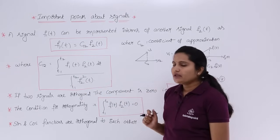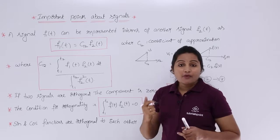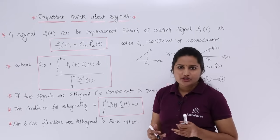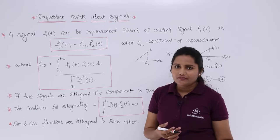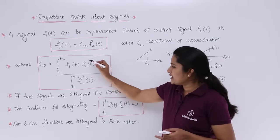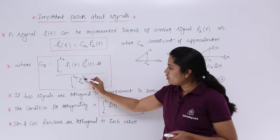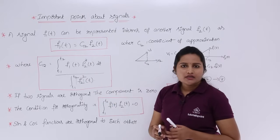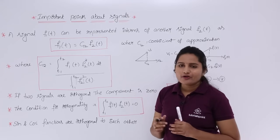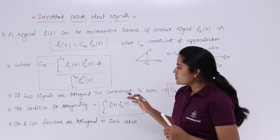In cases where one function is complex and the other is real, take the complex conjugate (star) of the second function in the numerator and use modulus in the denominator. That is the only difference when dealing with approximation between complex functions.